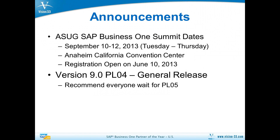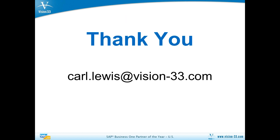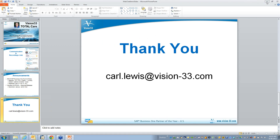Version 9, patch level 4, is what SAP refers to as the unrestricted shipment patch for version 9. We are waiting for patch level 5, which is due out any day, just as a precautionary measure to make sure that the early adopters go through most of the pain. As soon as patch level 5 is available, we'll be announcing that version 9.0 is truly a general release as far as Vision 33 is concerned.